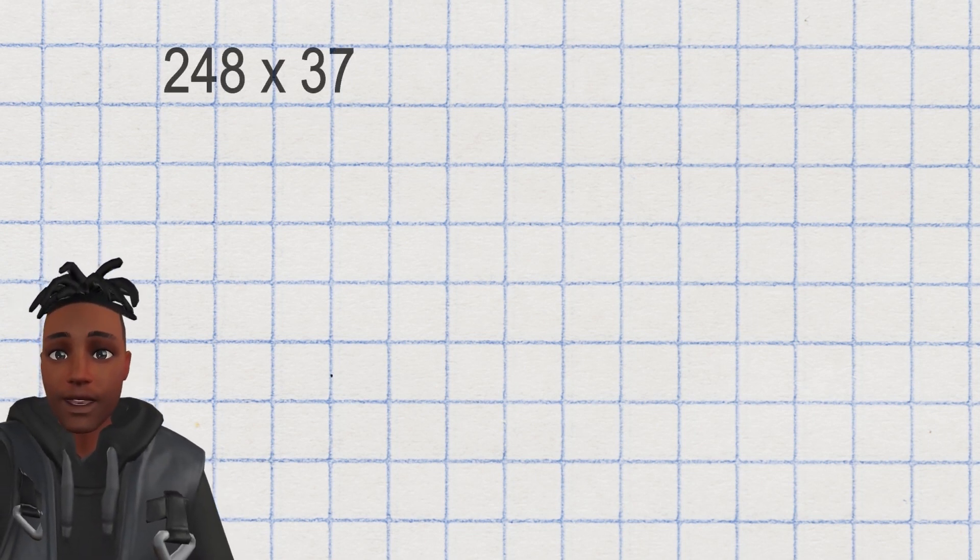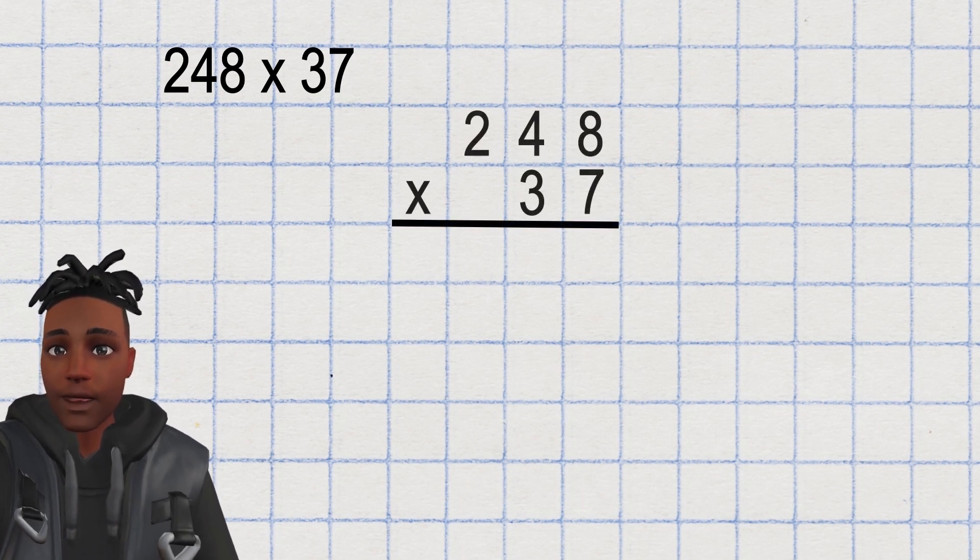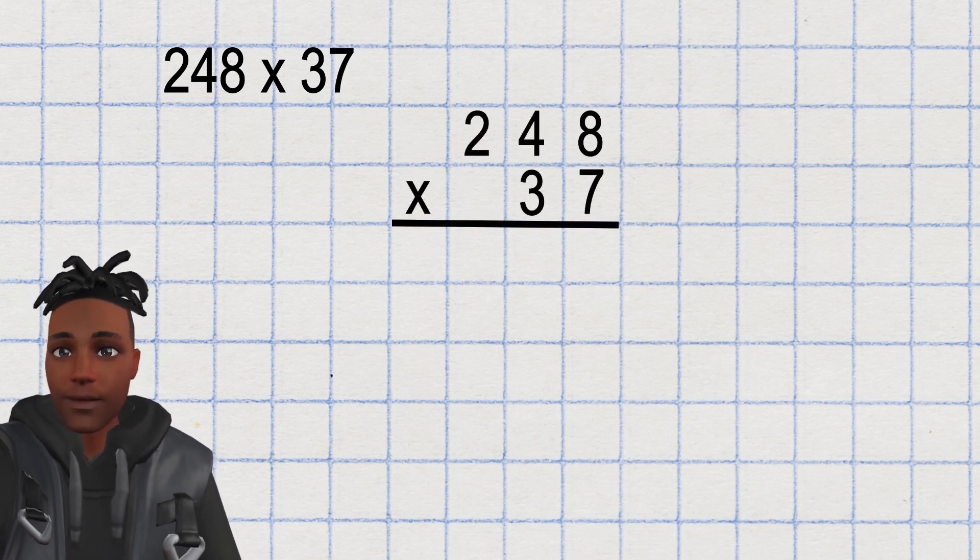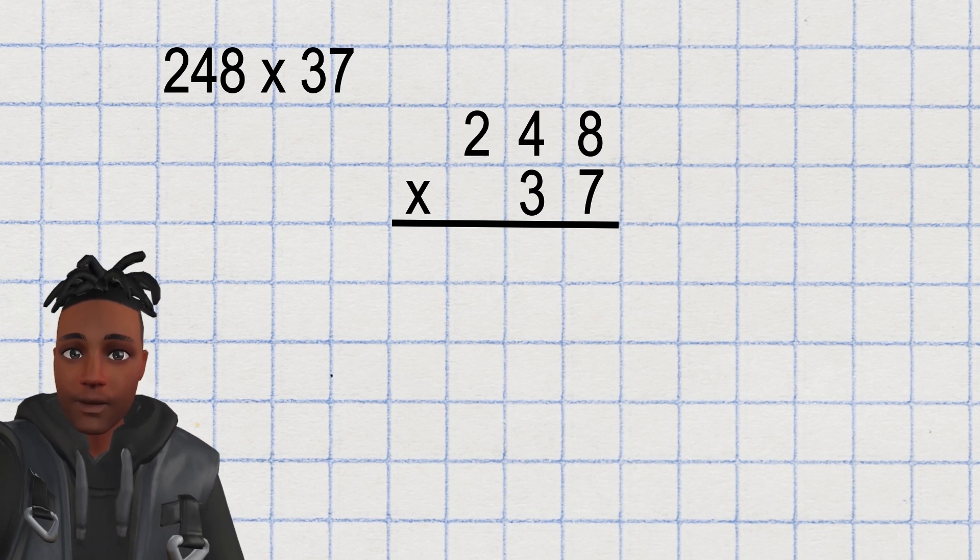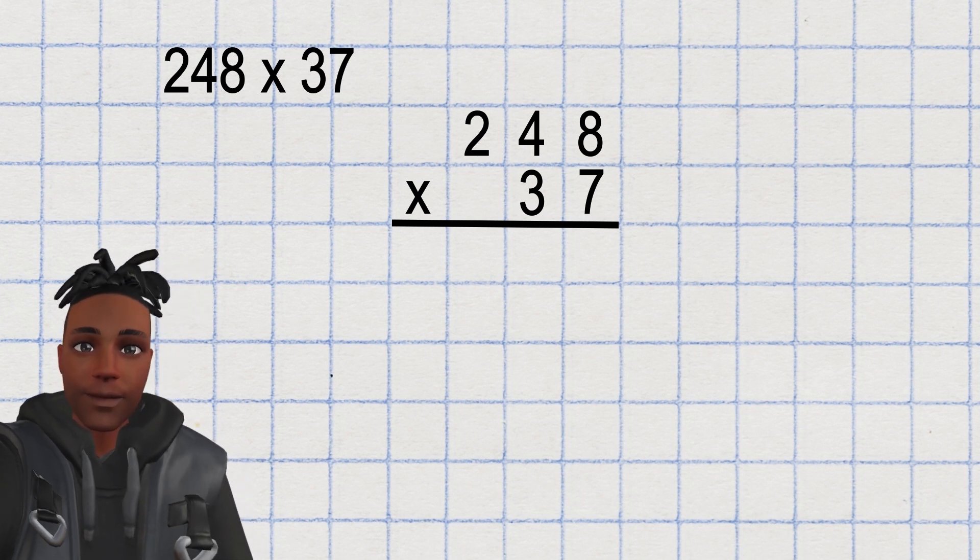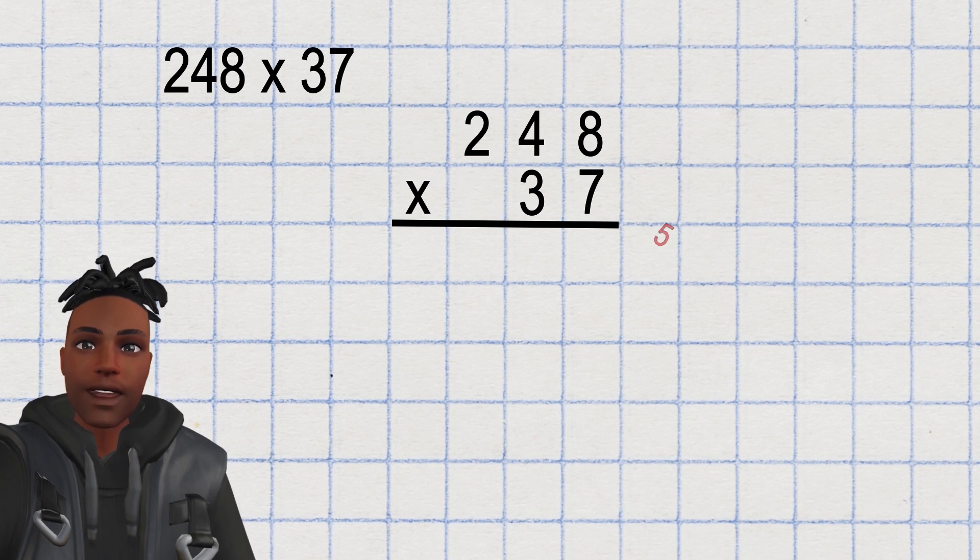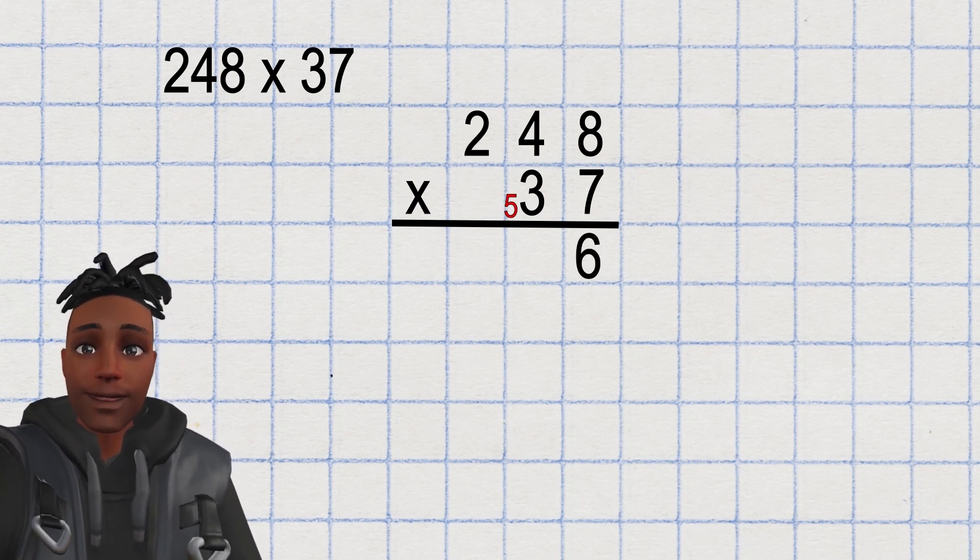Let me show you how I remember each step. Here is the question 248 times 37. First I write down the equation like you were shown previously. Then I multiply all the digits in the first row by the first digit in the second row. To help me remember what I've already multiplied, I put a tick above the digit. Let me show you. 8 times 7. The answer is 56. Carry the 5 and place the 6 in the answer column. Tick the 8.